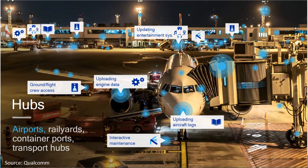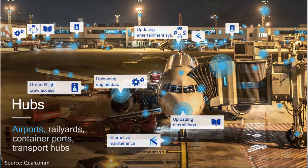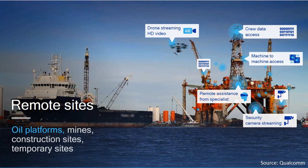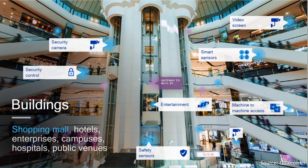Then we have hubs like airports, rail yards, and container ports. In the airport example, a plane that just arrives at its stand needs to upload aircraft logs and engine data, the entertainment system may need updating, and ground staff and crew need access for personal and work-related reasons. Oil platforms are quite far out at sea, where you need access not just for work but also for employees' personal reasons and entertainment. Buildings are also getting more and more connected, especially with IoT — you need access for security, maintenance, collecting sensor data, entertainment, etc.